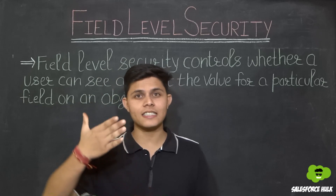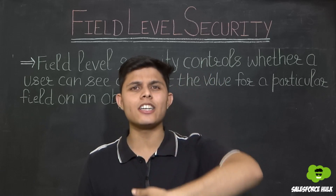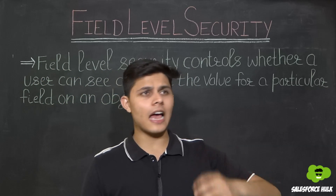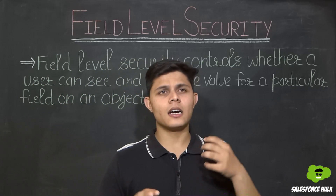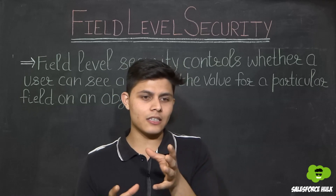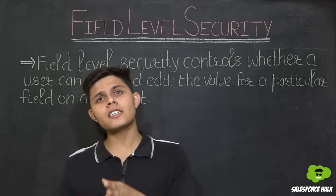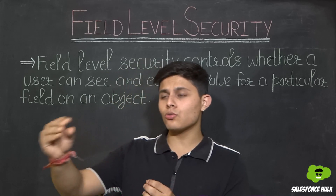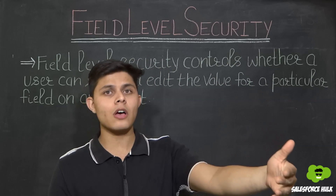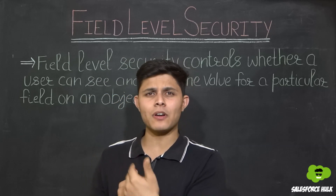Let's take an example. There is a Lead object, and on that Lead object there are multiple fields like Number of Employees, Company, Annual Revenue, Email, Name, and many more. You have created all those fields just to track information about a particular lead, but there is a restriction — you want only some users to have access to the email address and phone number on that record, while other users can access the lead record but without those fields.